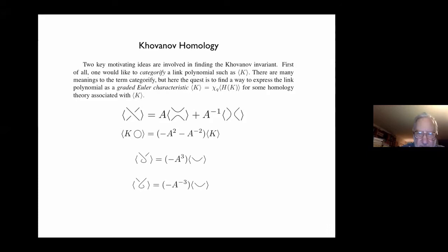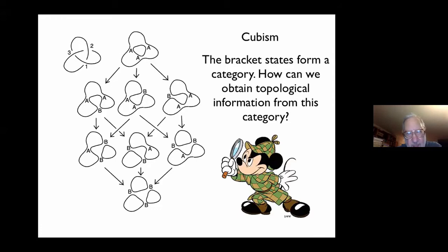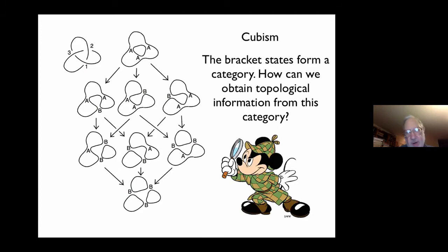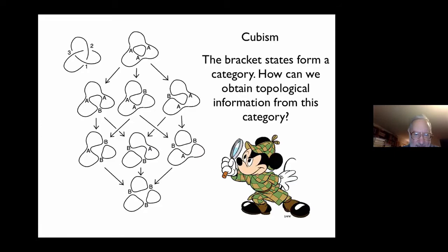Let me remind you about the bracket. Here is the Khovanov category: all the states of the bracket, with one arrow going from a given state to another if it changes from an A smoothing to a B smoothing, forming a cube. Our question is how you can obtain topological information from this category. One way is to forget it's a category and take the contribution from each object as the product of labels times D to the number of loops, then adjust B to be A inverse and D accordingly, getting the bracket polynomial invariant. But Khovanov's ambition around 1998–1999 was to do better, and he did.